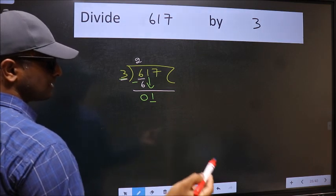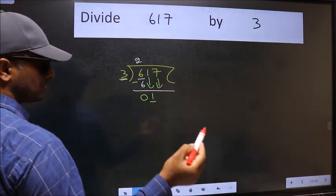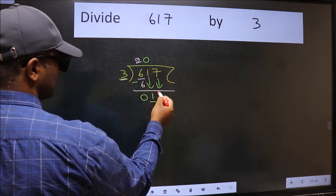So we should bring down the second number. And the rule to bring down the second number is we should put 0 here. Then only we can bring down this number.